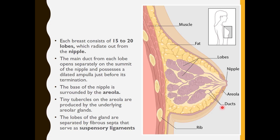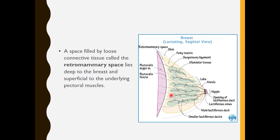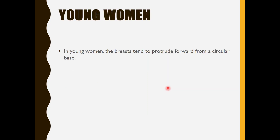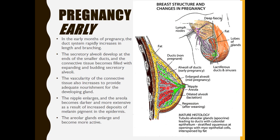The lobes of the gland are separated by fibrous septa that serve as suspensory ligaments. A space filled by loose connective tissue called the retromammary space lies deep to the breast and superficial to the underlying pectoral muscles. 'Retro' means behind, so this space is behind the breast, above the pectoralis major and minor muscles. In young women, the breast tends to protrude forward from a circular base.